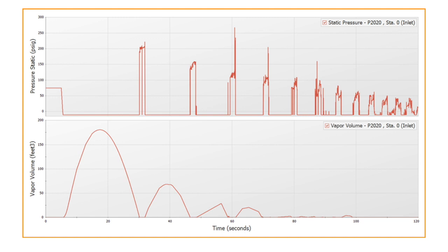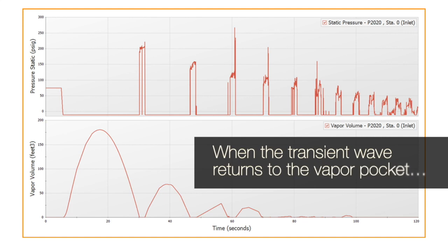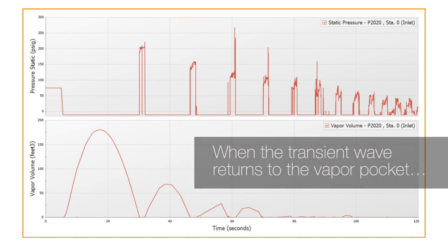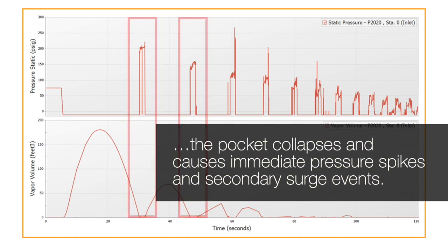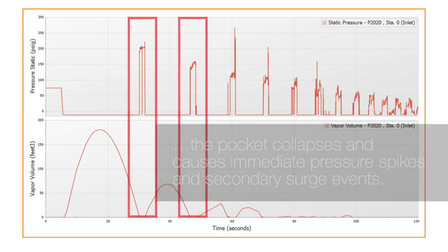Surge models show a growing vapor cavity as the pressure drops below the fluid's vapor pressure and into full vacuum. When the transient wave returns to the vapor pocket, the pocket collapses leading to immediate pressure spikes and secondary surge events.